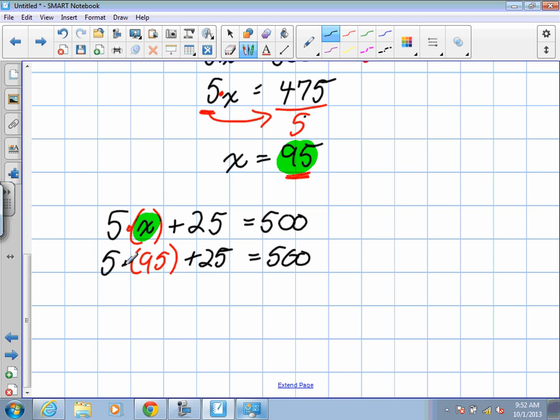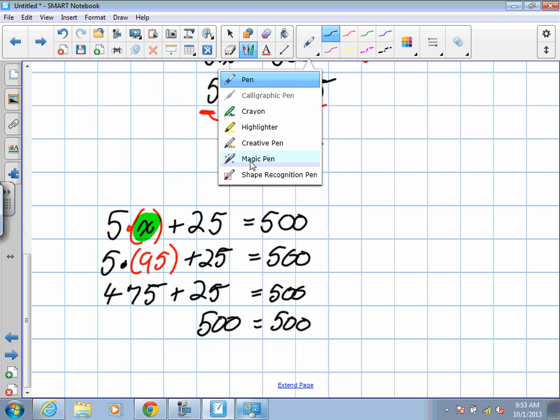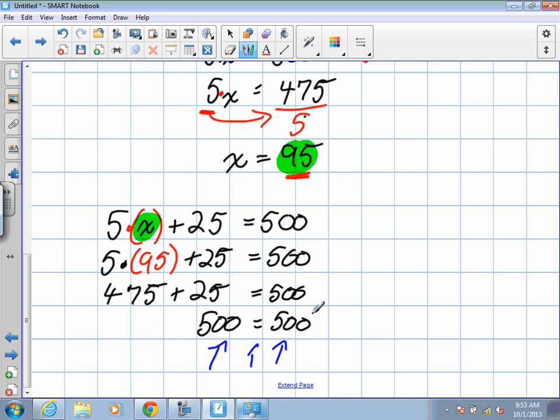What's 5 times 95? That's right, it's 475 plus 25 equals 500. And what's 475 plus 25? 500. So is this true? Is 500 equal to 500? We've checked our answer. We know that it's correct.